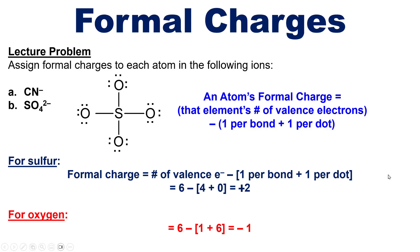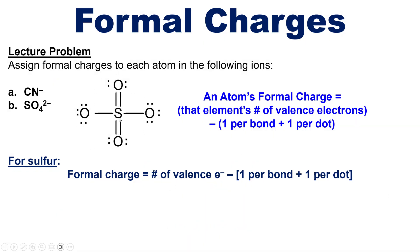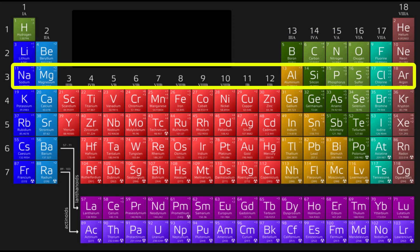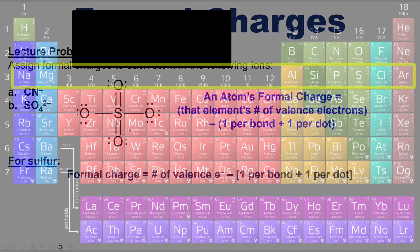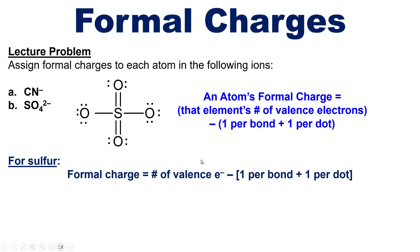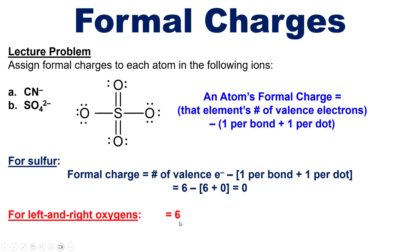What if we draw a different and also acceptable Lewis structure — one in which sulfur is surrounded by ten total electrons? You might think there's no way this could be stable, but remember that sulfur is in row three of the periodic table. Once you hit row three and below, elements actually do have the ability to violate their octet — that is, to have more than eight electrons around them. In this structure, sulfur again has six valence electrons, and there are six bonds going to sulfur and zero dots, so its formal charge is six minus six plus zero, which equals zero.